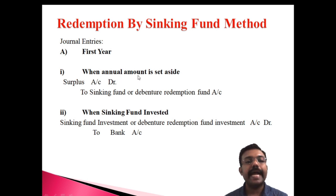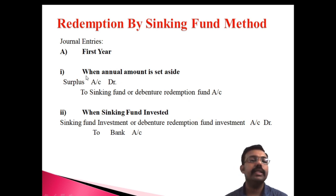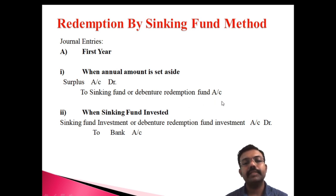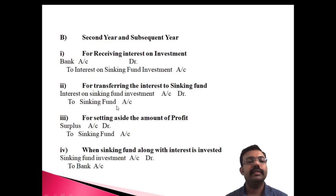These are the two entries related to the first year. When the annual amount is set aside, the first entry is: Surplus Account debit to Sinking Fund or Debenture Redemption Fund Account. When the sinking fund is invested, the second entry is: Sinking Fund Investment or Debenture Redemption Fund Investment Account debit to Bank Account.